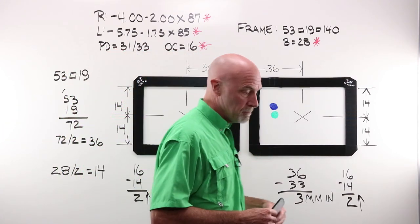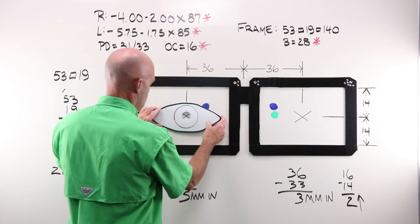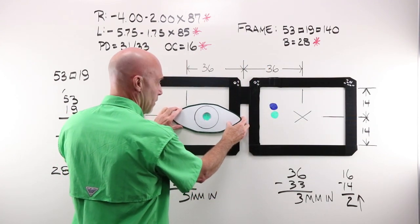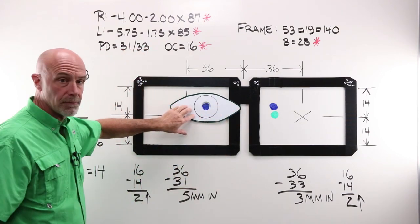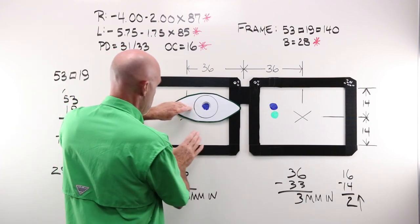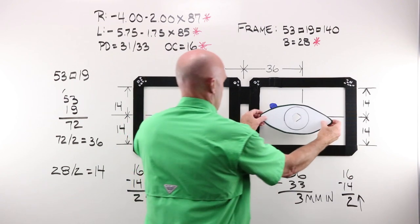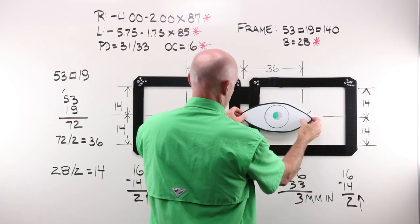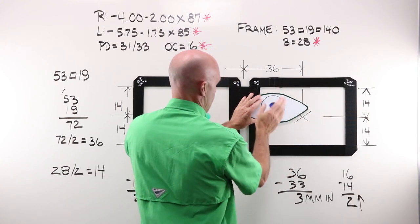That means that this person, their eye is not here. It's not here. Their eye is here in this frame. So I'm going to be moving my OC over and up. They're not here, they're not here, they're here, in and up.